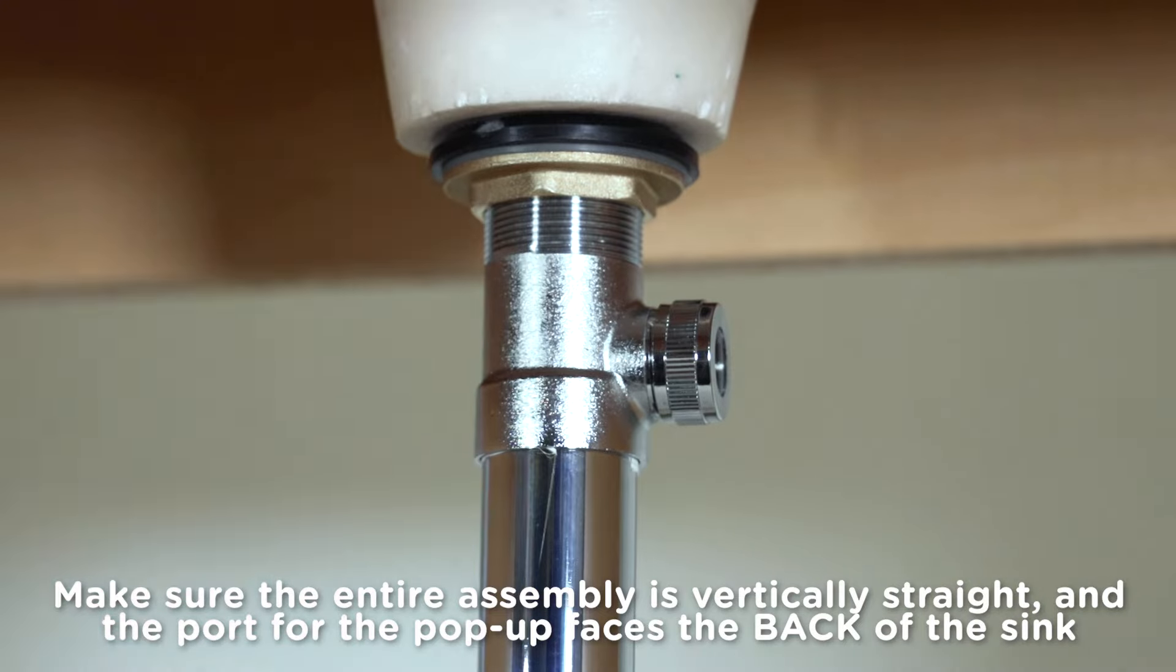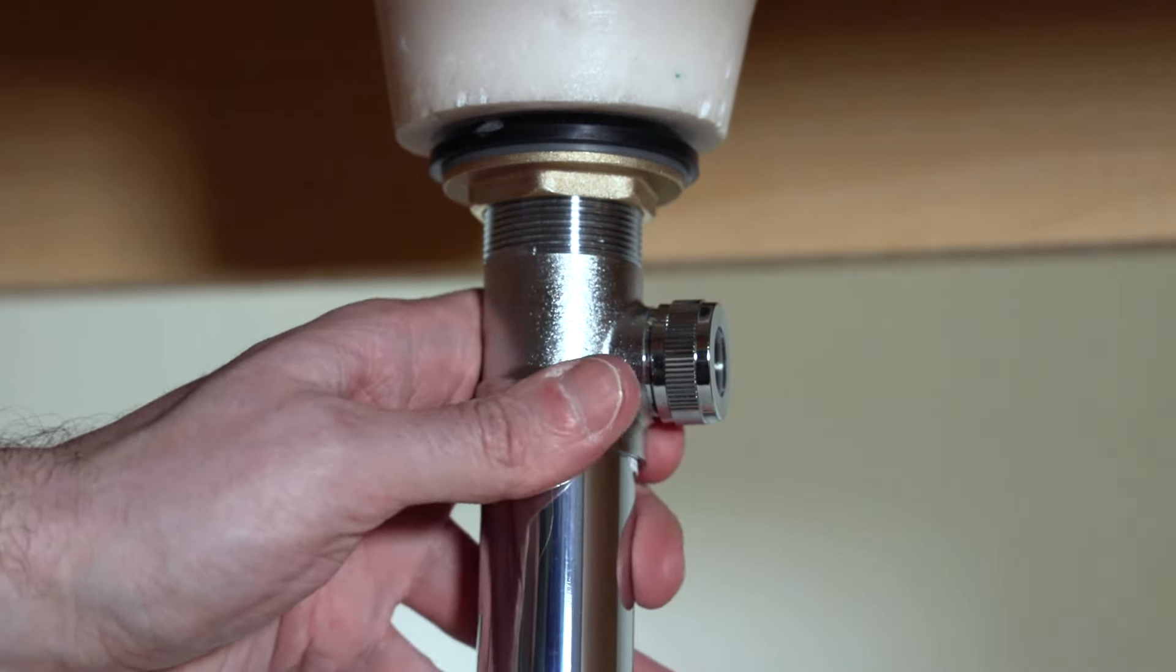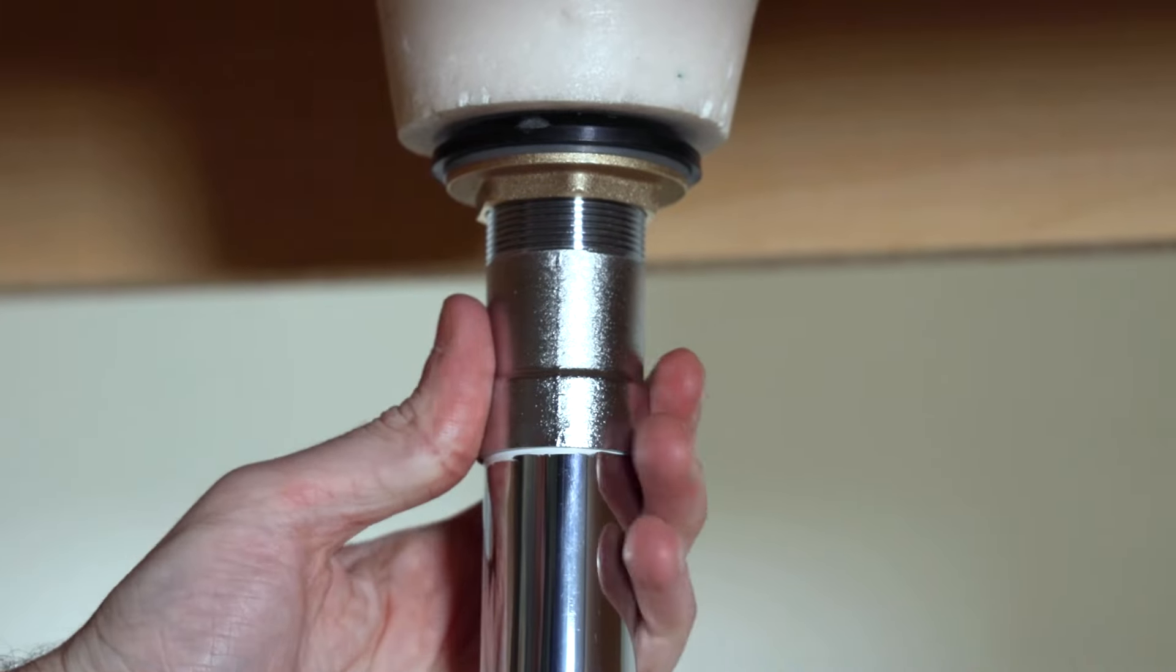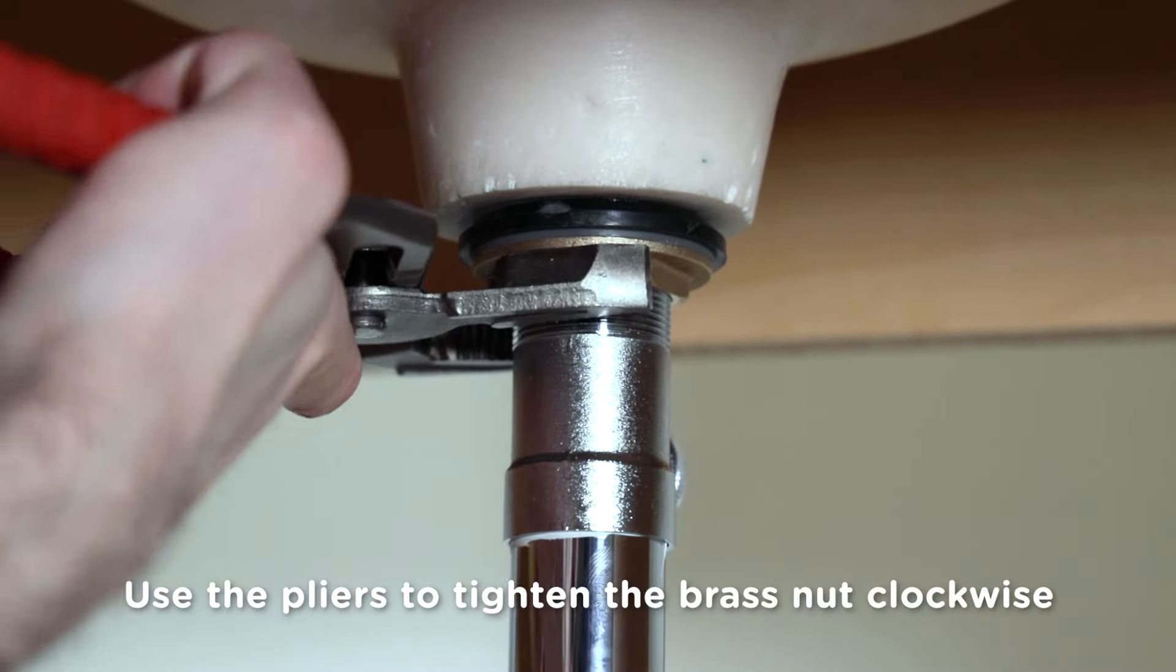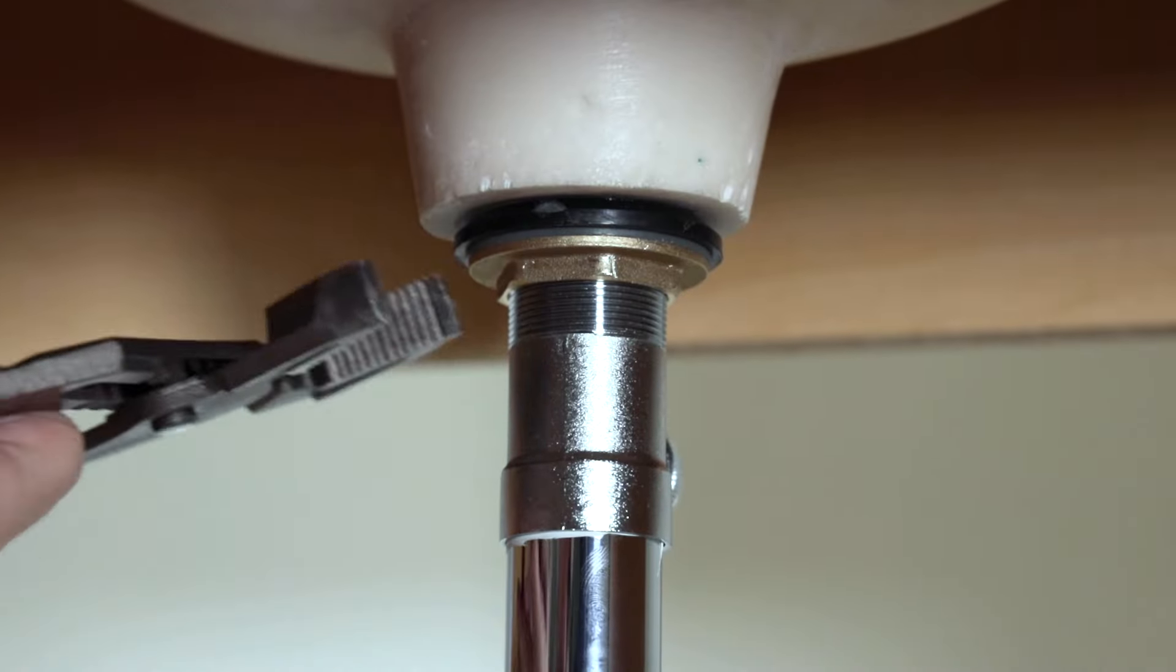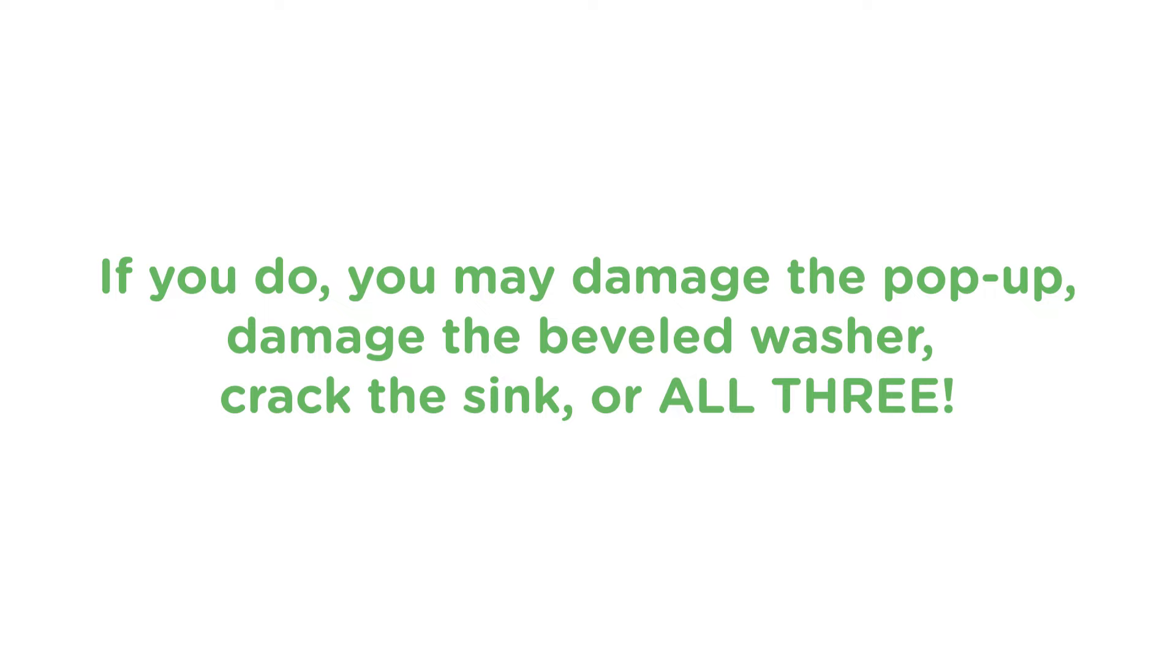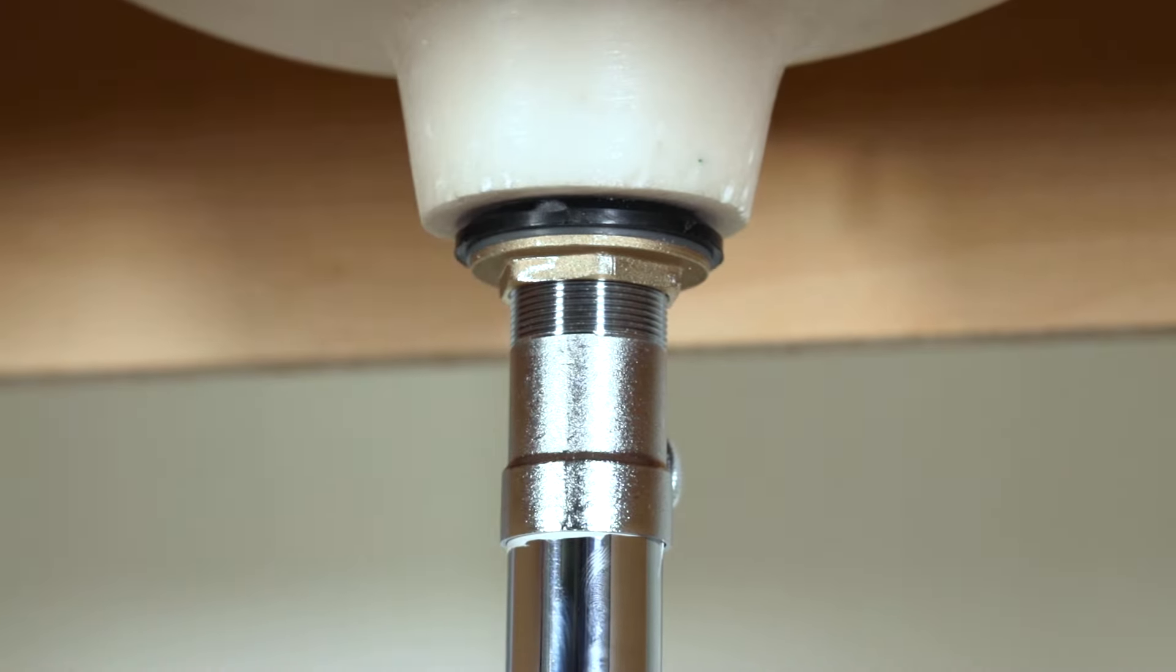Before tightening the nut with the pliers, make sure that the entire assembly is vertically straight and that the port for the pop-up faces the back of the sink. Now, while holding the assembly from spinning, use the pliers to tighten the brass nut clockwise. It's very important to not over tighten this nut. If you do, you'll either damage the pop-up, damage the beveled washer, crack the sink, or all three. You don't have to be Hercules here. Get it snug, then just give it one more quarter turn. Go easy.